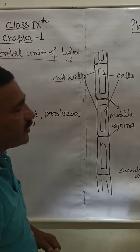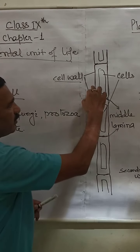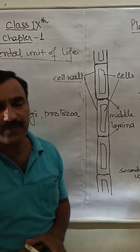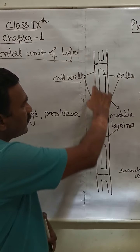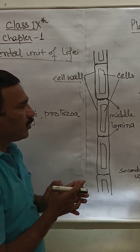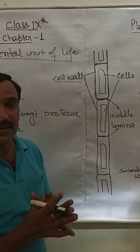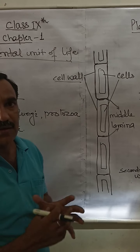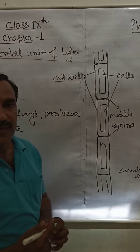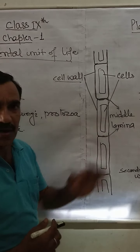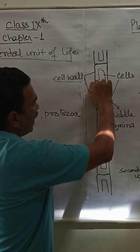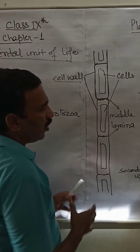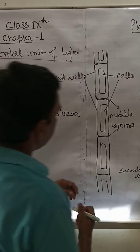This cell wall is made up of cellulose. Cellulose is nothing but a long chain of glucose. Cellulose is a component which is not digested by animals or human beings. So this plant cell wall is mainly made up of cellulose, which is a long chain of glucose.